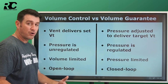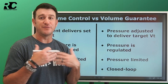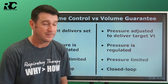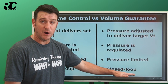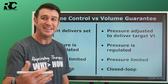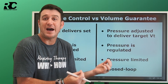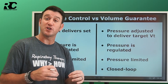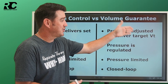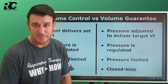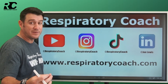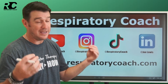Open loop mechanical ventilation — the vent doesn't talk to itself; it does what you tell it to do. Volume guarantee is a closed loop mode — the ventilator talks to itself: volumes too high, turn the pressure down; volumes not high enough, turn the pressure up. It adjusts itself to reach that target tidal volume. That is volume control versus volume guarantee in a nutshell.